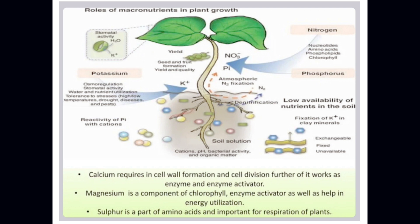Role of macronutrients in plant growth: Calcium is required in cell wall formation and cell division, and it works as an enzyme and enzyme activator. Magnesium is a component of chlorophyll, an enzyme activator, and helps in energy utilization. Sulfur is a part of amino acids and important for the respiration of plants.